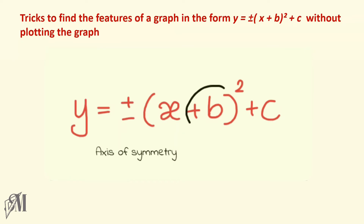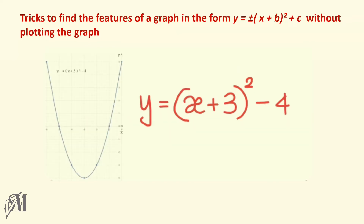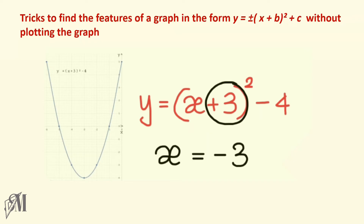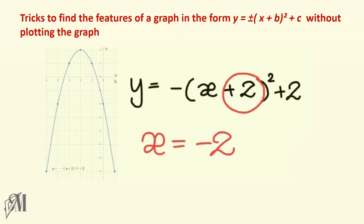Now let's see how to find out the axis of symmetry. The minus b of the equation equals the axis of symmetry. So in this case, b is plus 3, so the axis of symmetry will be x equals minus 3. In this equation, b is plus 2, so the axis of symmetry will be x equals minus 2. You can confirm this by looking at the graph too.